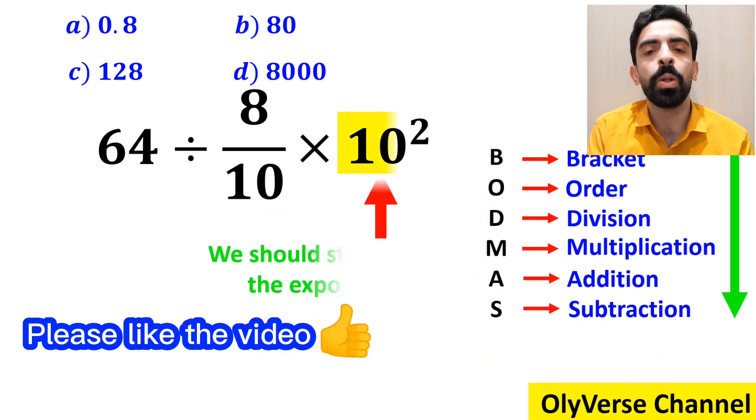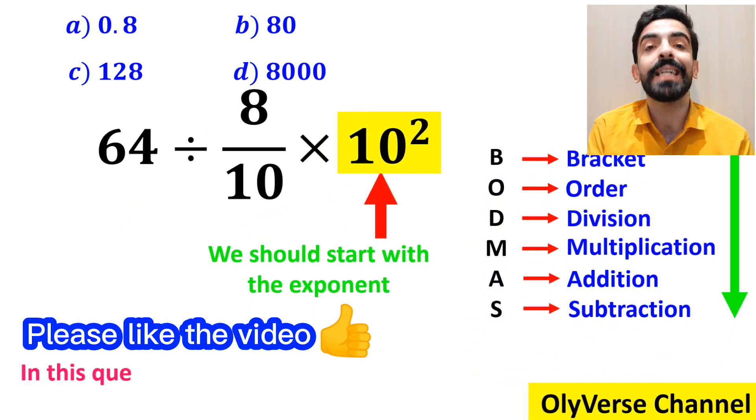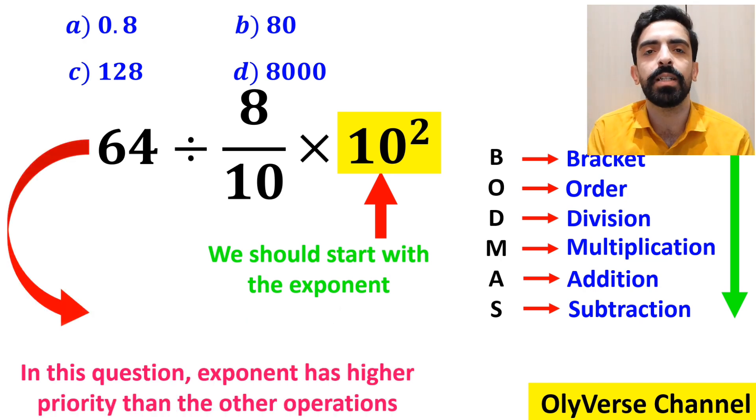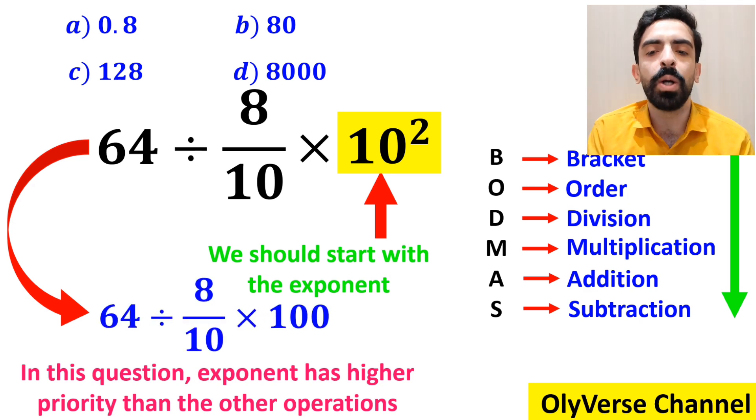According to the BODMAS rule, we should start with the exponent, because in this expression, exponent has a higher priority than the other operations. So instead of the original expression, we can write 64 divided by 8 over 10 times 100.